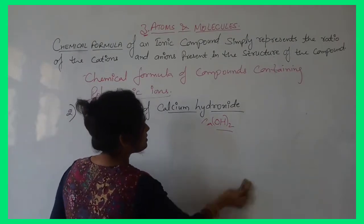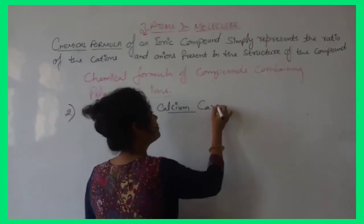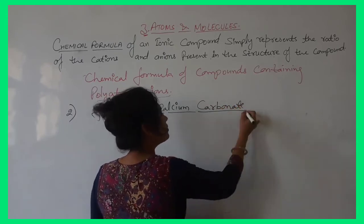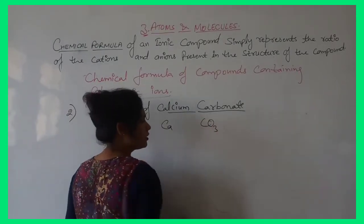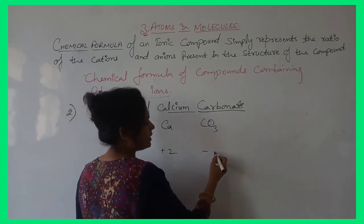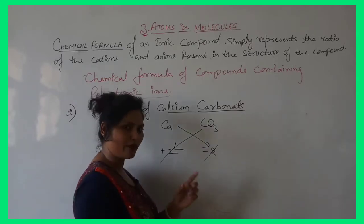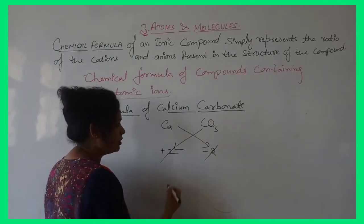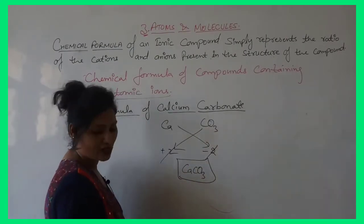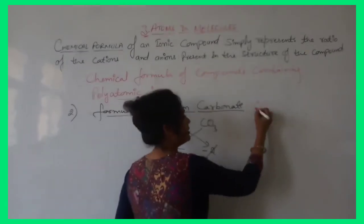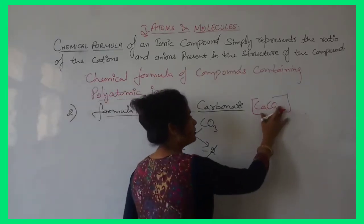Formula of calcium carbonate: Ca (valency 2) and CO₃²⁻ (valency 2). Both valencies are the same — common factor is 2, divide by 2, each gets subscript 1. The final formula is CaCO₃.